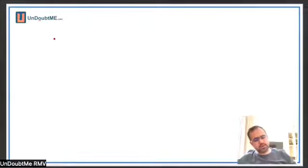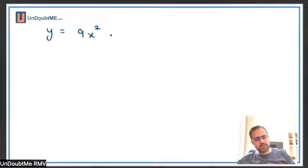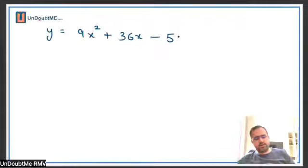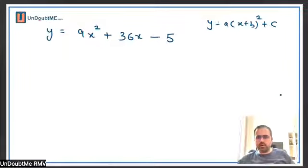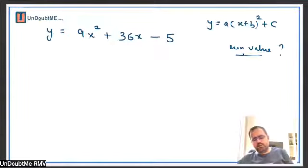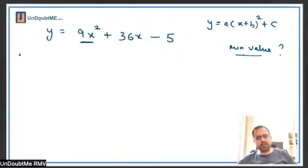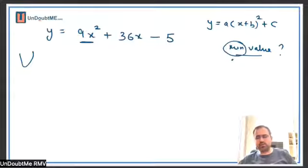The question will be exactly similar. So: 9x squared plus 36x minus 5. You need to write it in the form of a times x plus b whole square plus c, and then find the minimum value of this parabola. The question asks for minimum because 9 is positive — an upward parabola. If the coefficient were negative, the question would be about maximum value.